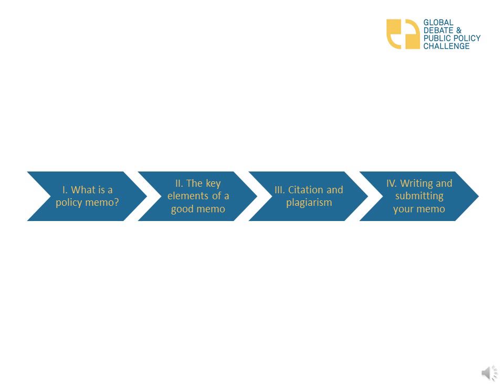We will look into four areas that are relevant for the first task. We will cover the basics of a policy memo, then go into more detail and explain the key elements of a good memo. We will also discuss the importance of citing sources properly to prevent plagiarism. And finally, we will go through the submission guidelines and talk about length, font size, and how to submit your memo.